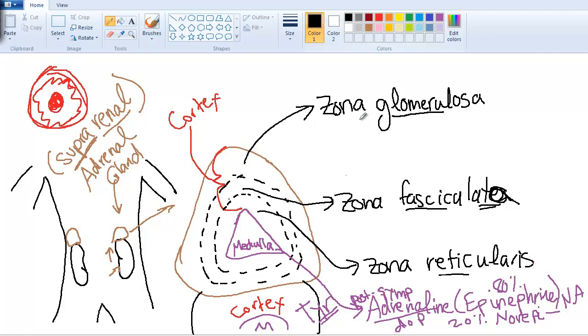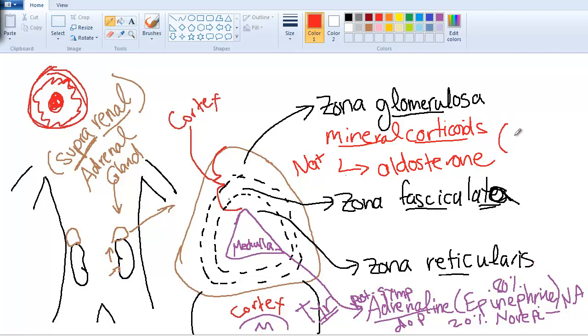Now for the cortical zones. In the zona glomerulosa we have mineralocorticoids. Corticoids because it's coming from the cortex. What mineral are we regulating? It's sodium, and the hormone for that is aldosterone. It regulates sodium reabsorption in the nephrons. Basically, we're regulating the concentration of salt in the body.